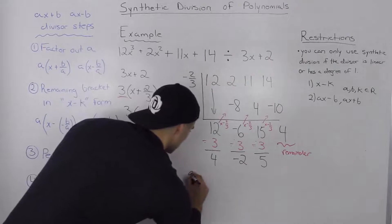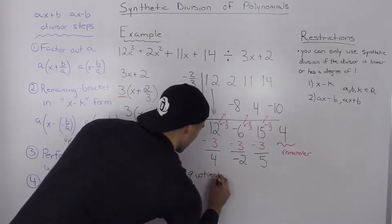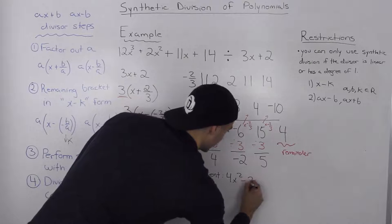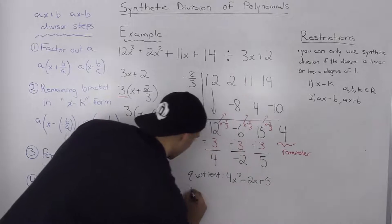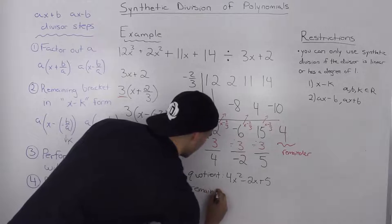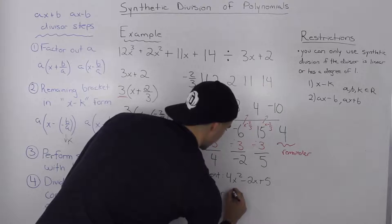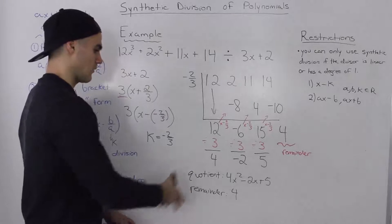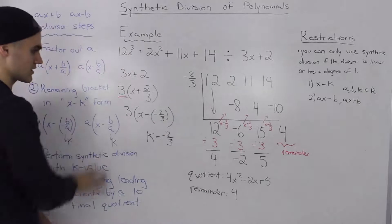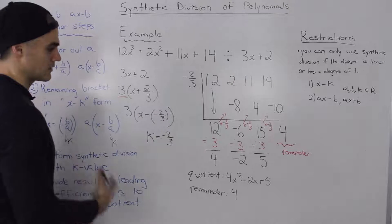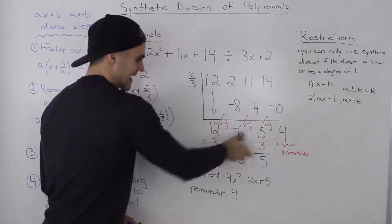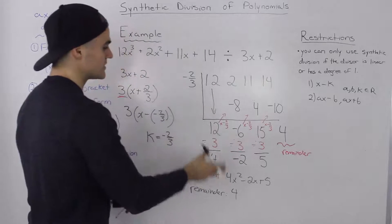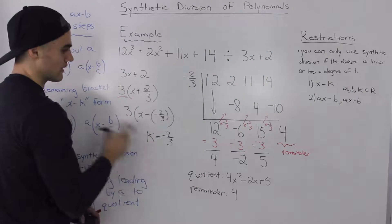So the final quotient is 4x squared minus 2x plus 5, and our remainder is 4 — the same result we got when we did this with long division, just with a more complex process and more steps involved. Make sure you write these steps down and review them, especially this last part: whatever resulting leading coefficients you get, you have to divide by whatever a value you factored out initially.